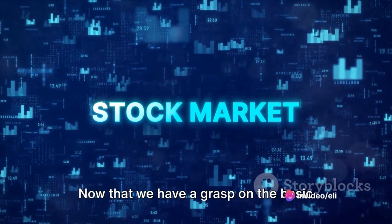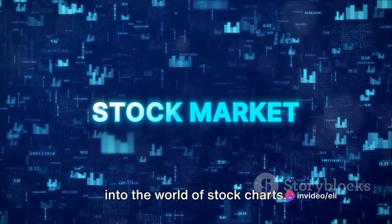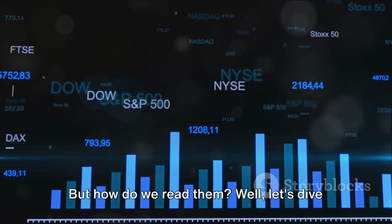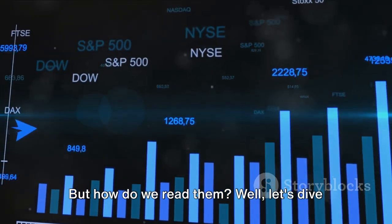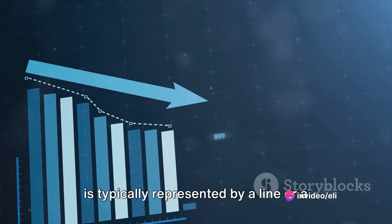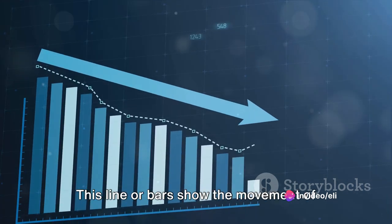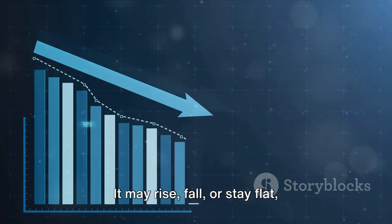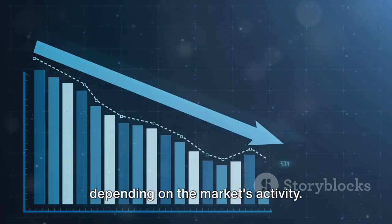Now that we have a grasp on the basic elements, we can start to delve deeper into the world of stock charts. Price and volume are the heart of any stock chart, but how do we read them? When we look at a stock chart, the price is typically represented by a line or a series of bars. This line or bars show the movement of the price over a given period. It may rise, fall, or stay flat depending on the market's activity.